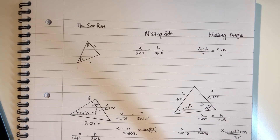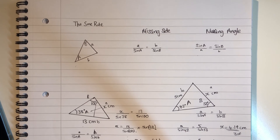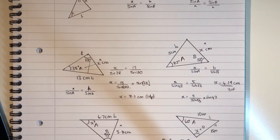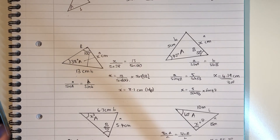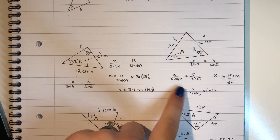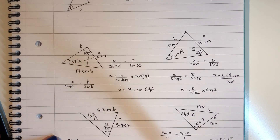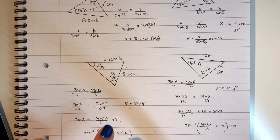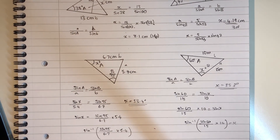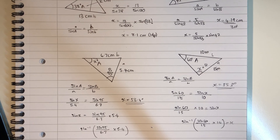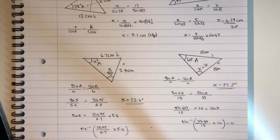To summarise: the formula for a missing side is A over sine A equals B over sine B, and for a missing angle it is sine A over A equals sine B over B. This is how to substitute values when finding a missing side, and this is how to substitute values when finding a missing angle. Thank you.